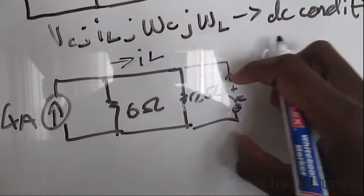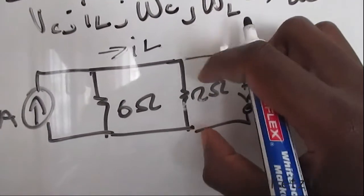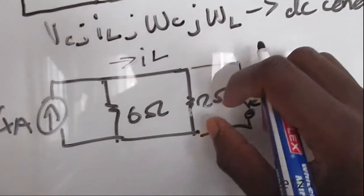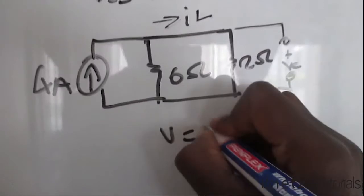Which means VC is the same as the voltage across this 2-ohm resistor. Now after finding this current, we can use Ohm's law to find the voltage, which is VC.